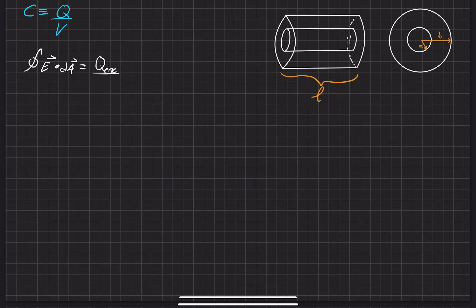Gauss's Law is Q enclosed over epsilon naught. As I said before, Q enclosed is just some Q that I arbitrarily smeared across this cylinder.